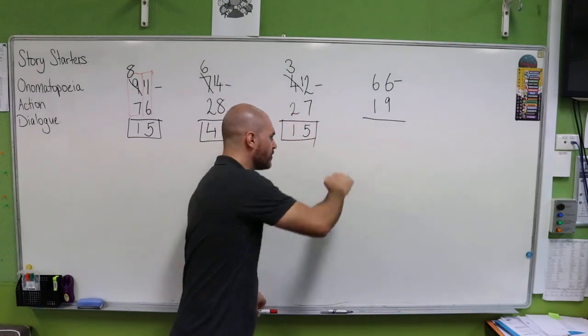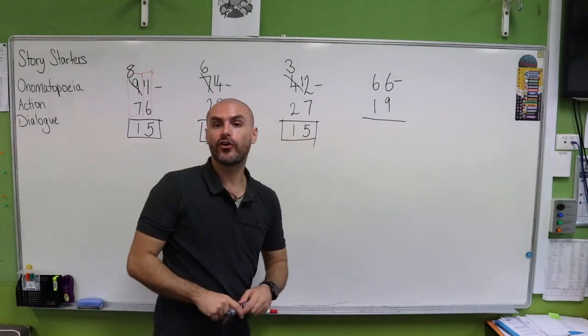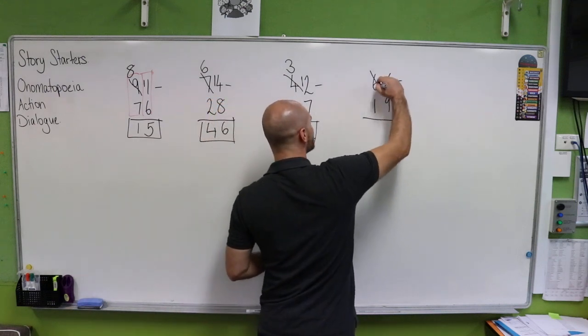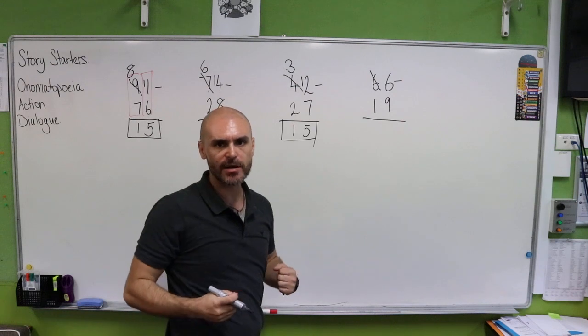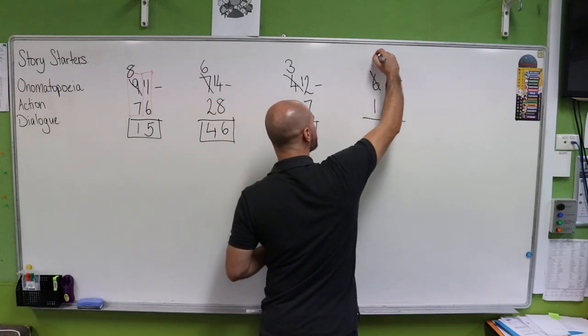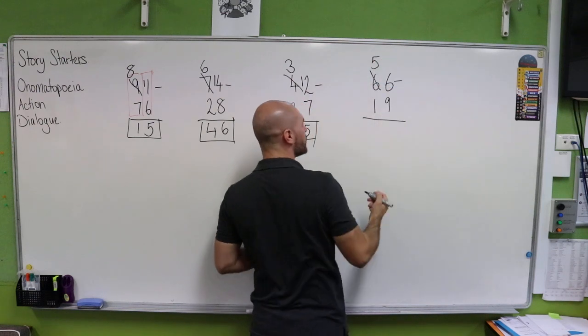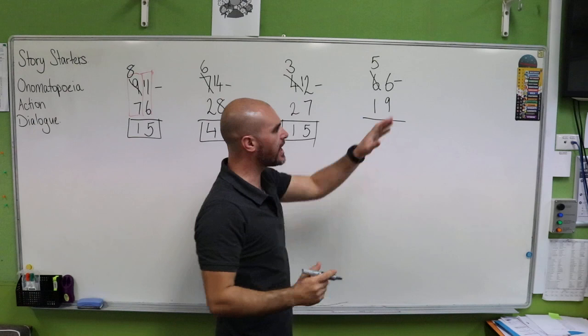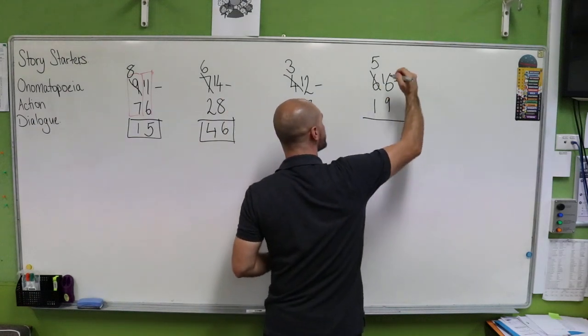So we're going to have to knock and borrow next door. So our six in our tens column gets crossed out because it's going to give away some of its own value. And our six becomes five. That one is going to move next door and it's going to turn our six into 16.